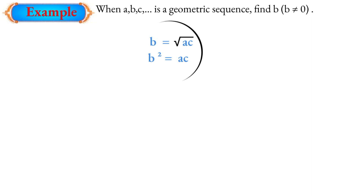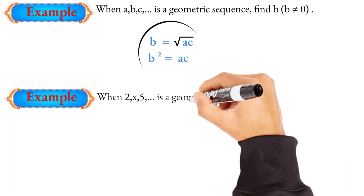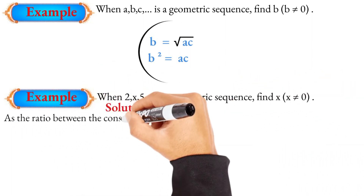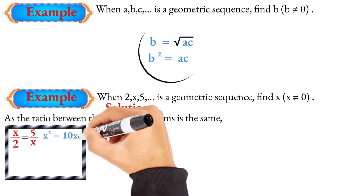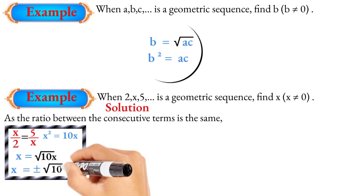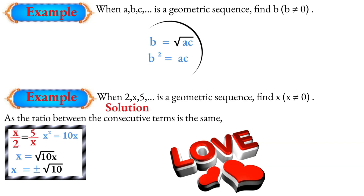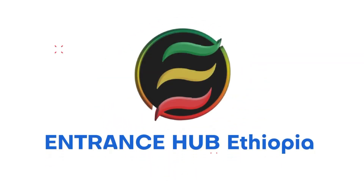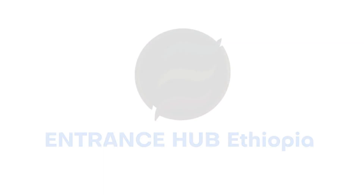For example, x equals the square root of 2 times 5, which is the square root of 10. So x equals plus or minus the square root of 10. Thank you.